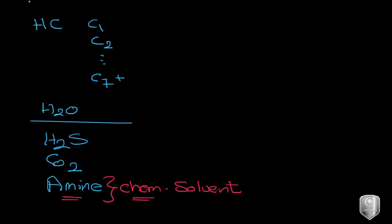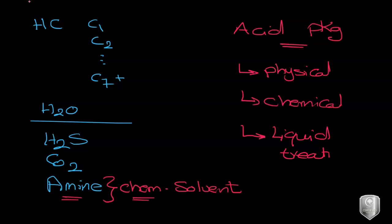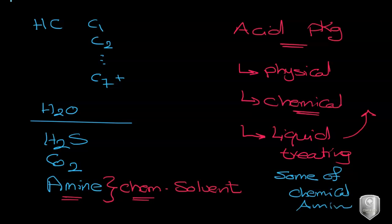The presence of amine leads us to change the thermodynamic package. Normally we use Peng-Robinson, but in this case we are going to use a different acid gas package. In Aspen HYSYS we have three main acid gas packages: the acid gas package can be physical, if you have a physical solvent; chemical, if you have a chemical solvent; or liquid treating, which is a subset of the chemical approach and includes some amine options.